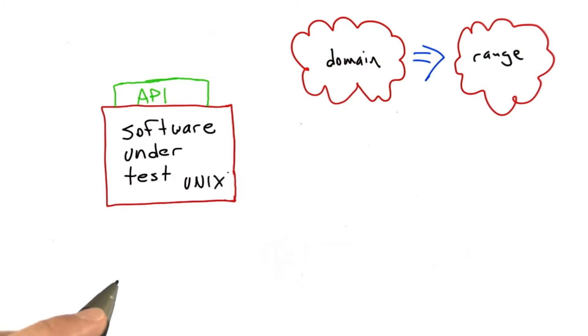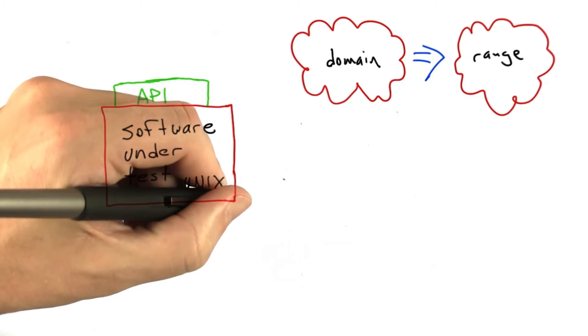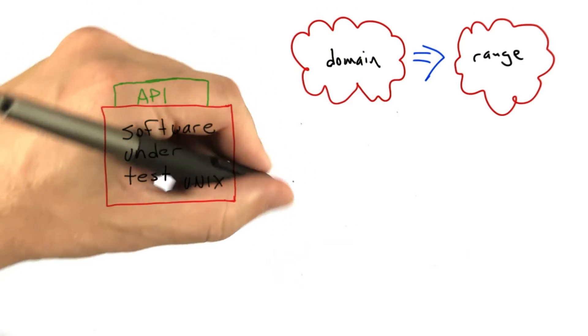So this example will be a very slightly simplified version of the Unix read system call, and this is a system call supported by all Unix platforms, so by Mac OS and Linux and others. All the read system call does is takes a file that's already open and reads some bytes out of it into the address space of the process that calls read.